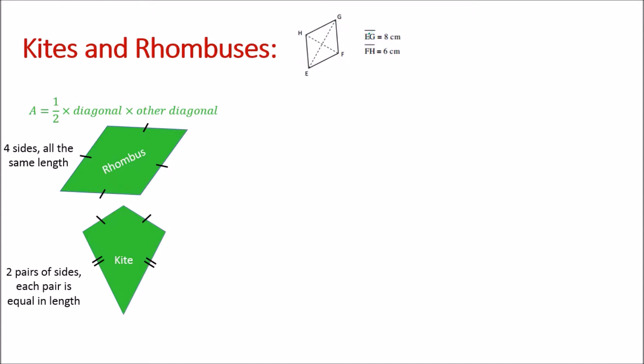We're being told that line EG, which is this one here, is eight centimeters. And line FH, which is this one along here, is six centimeters. It's a little bit messy in here, but basically we've got one diagonal and the other diagonal.